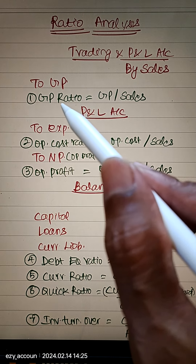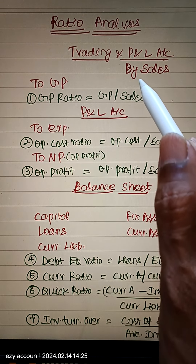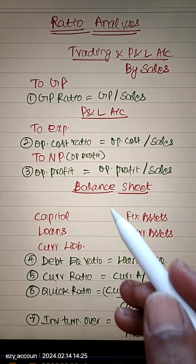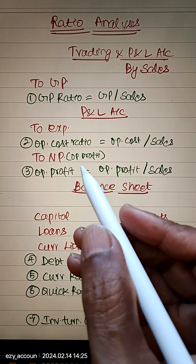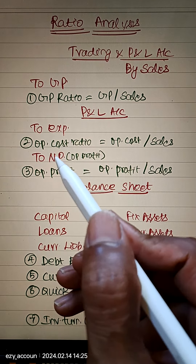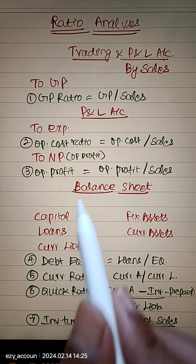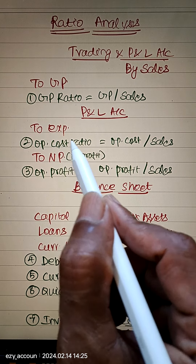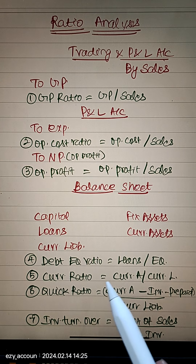First, Gross Profit Ratio is Gross Profit divided by Sales. Next, all Operating Expenses — excluding non-recurring income and covering normal business expenditure — form the Operating Cost. Operating Cost Ratio is equal to Operating Cost divided by Sales.